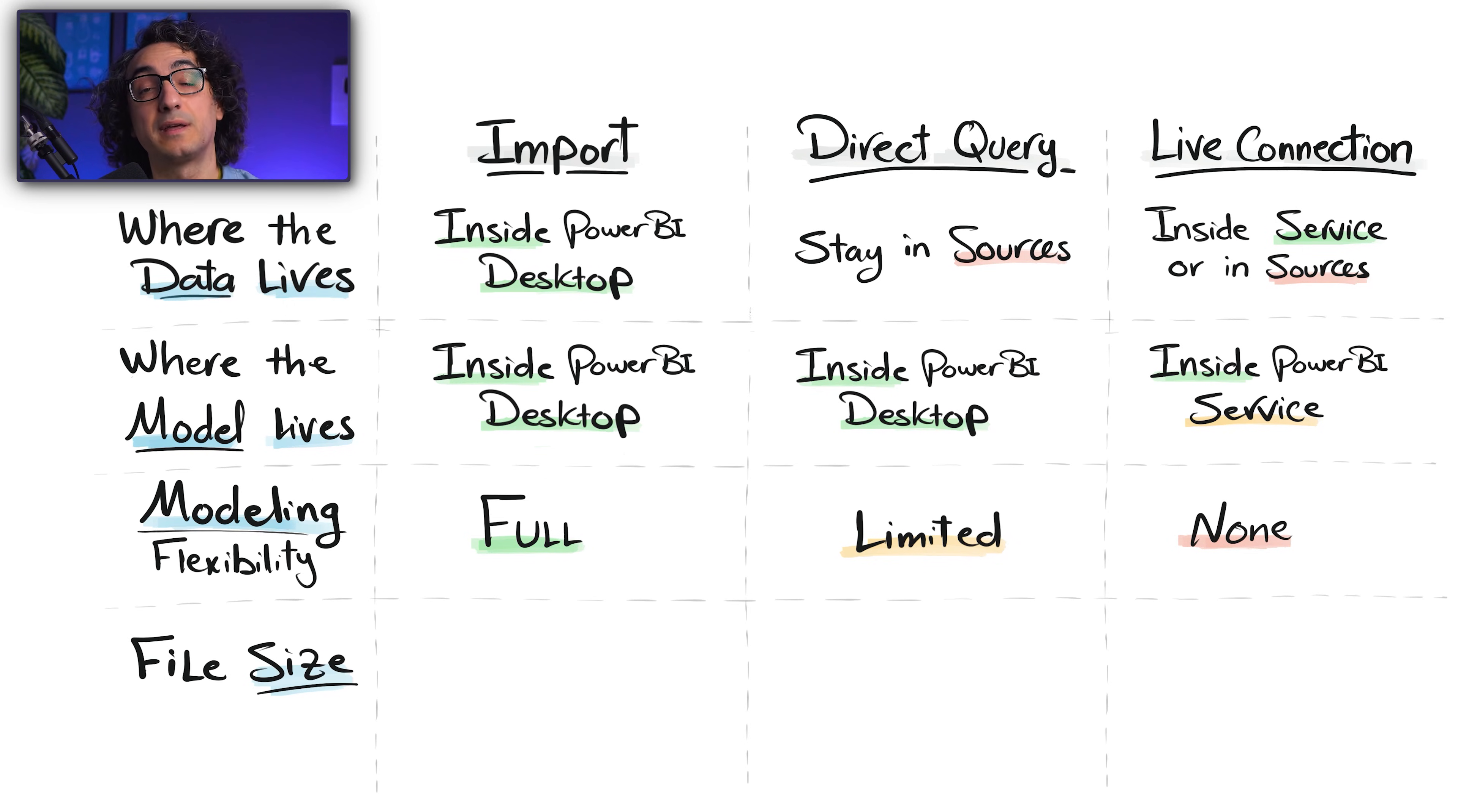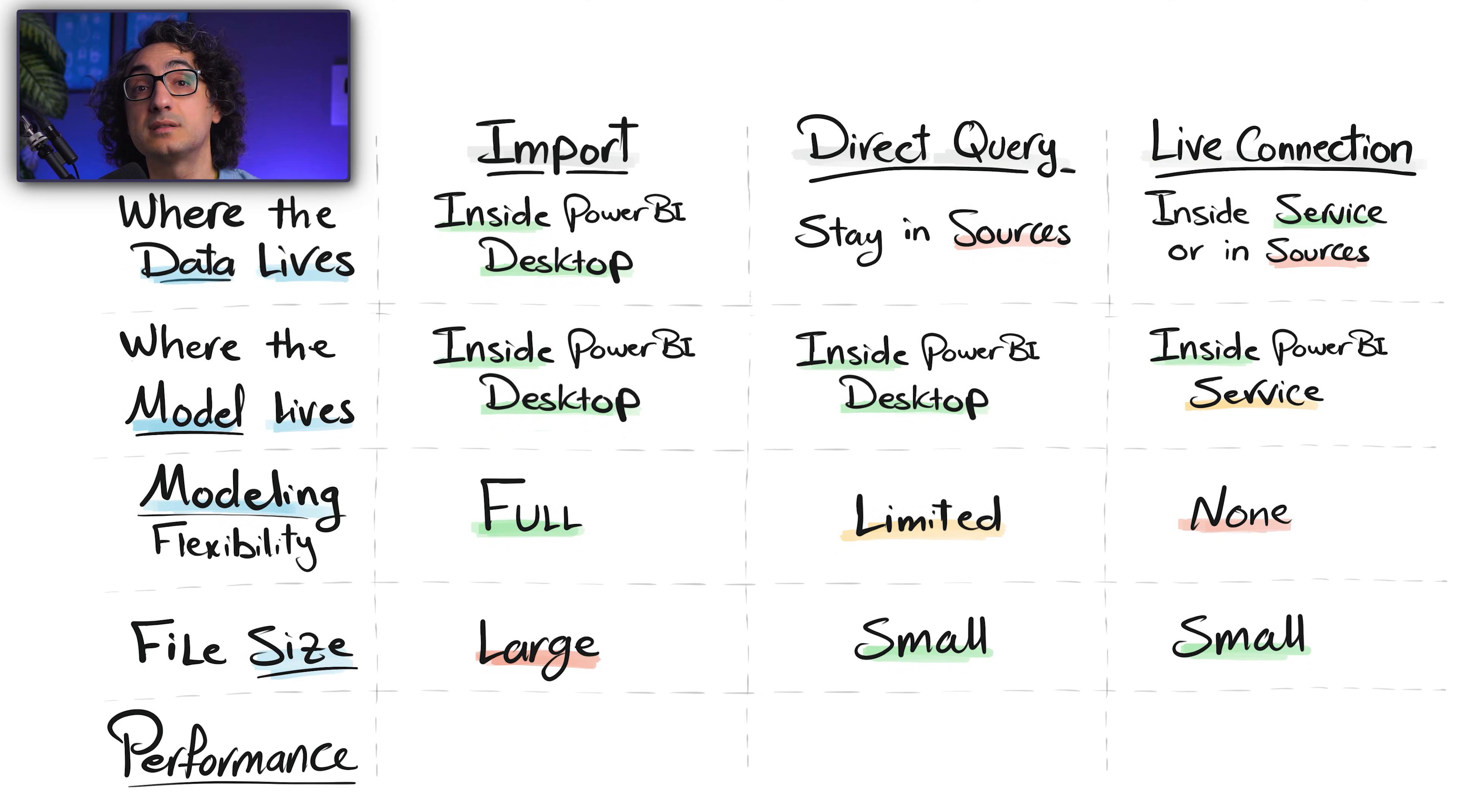Next, the file size. With Import, the file can become large because it stores data. But with Direct Query and Live Connection, your file is gonna stay very small. And of course, the most important topic: the performance.